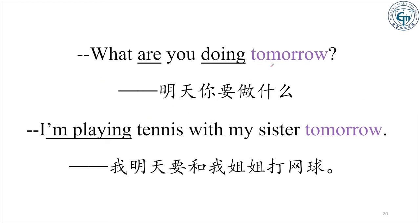"What are you doing tomorrow?"(明天你要做什么?) 进行时加将来时间表示将来。回答:"I'm playing tennis with my sister tomorrow."(明天我要和我妹妹/姐姐打网球。) 如果上下文已经提到了 tomorrow,回答中的 tomorrow 可以省略,直接说 "I'm playing tennis with my sister",上下文清楚表示将来。